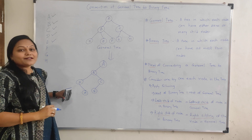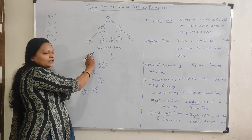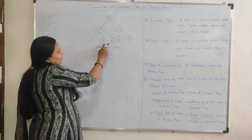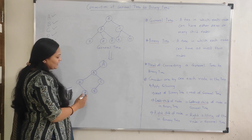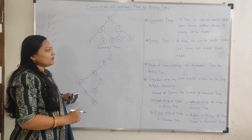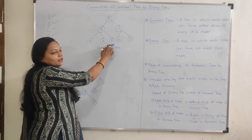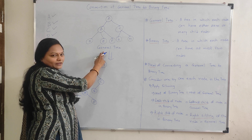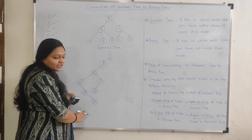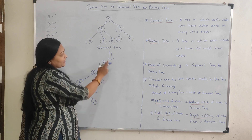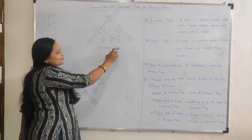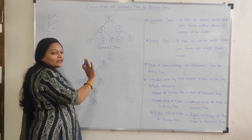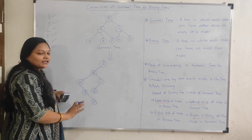Now consider node E. E has no leftmost element, so it has no left child. E has a right sibling F, so F becomes the right child of E. Now consider node F. F has no leftmost element, so it has no left child. F also has no right sibling — G is not a sibling of F because siblings must share the same parent. So F has no left or right child.